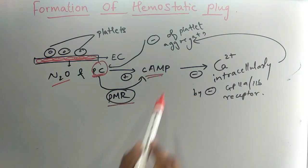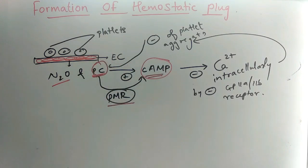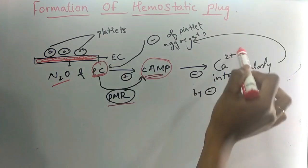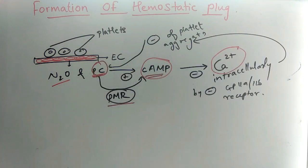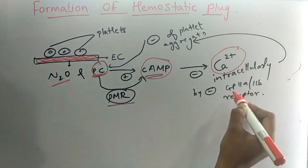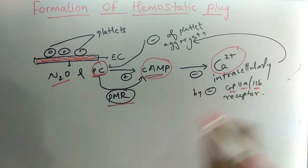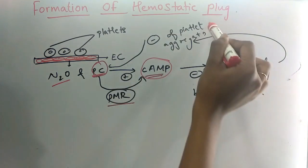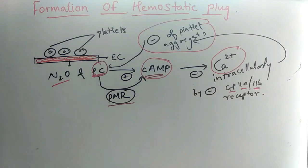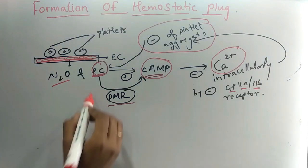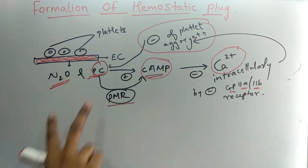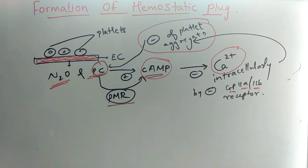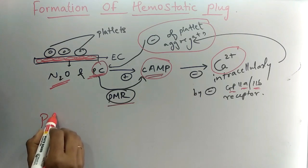Once there is a release of the secondary messenger, cyclic AMP will inhibit the calcium present intracellularly by inhibiting glycoprotein 2A and 2B. When intracellular calcium is inhibited, this leads to inhibition of platelet aggregation. So indirectly, nitric oxide and prostacyclin are responsible for inhibition of platelet aggregation.